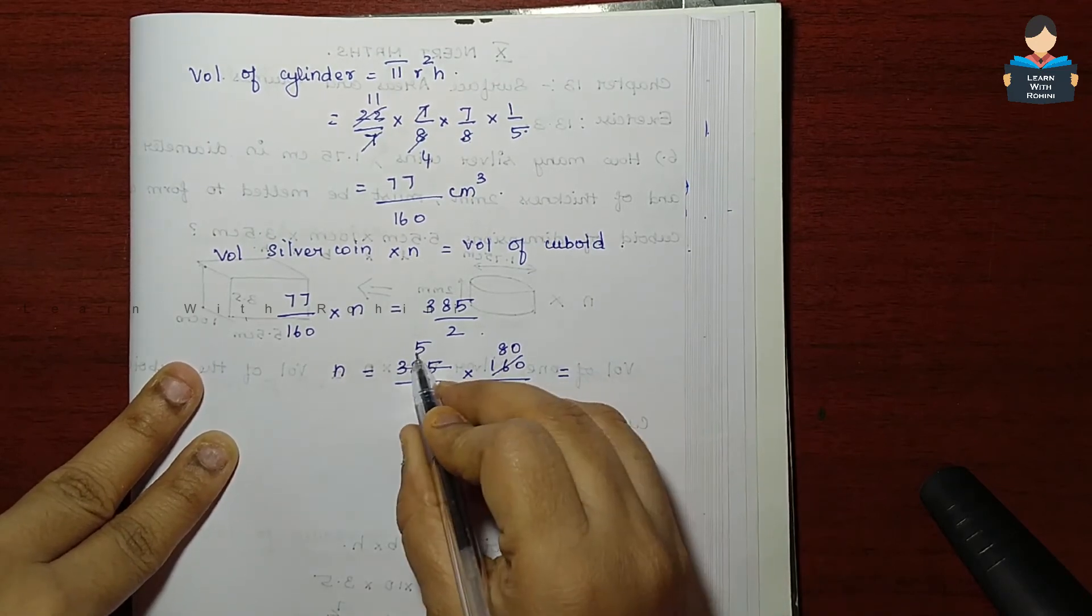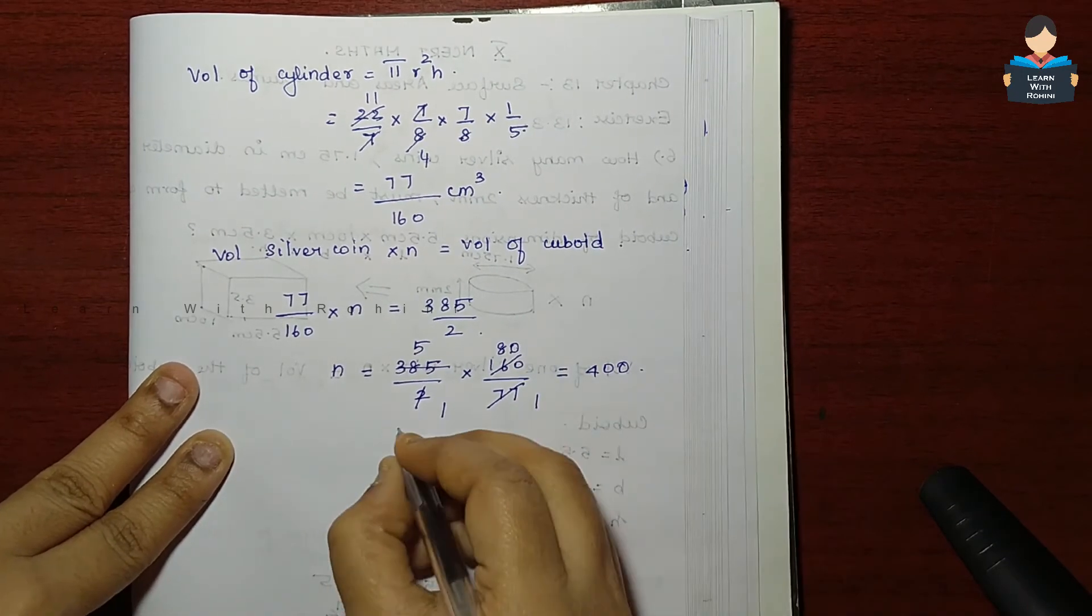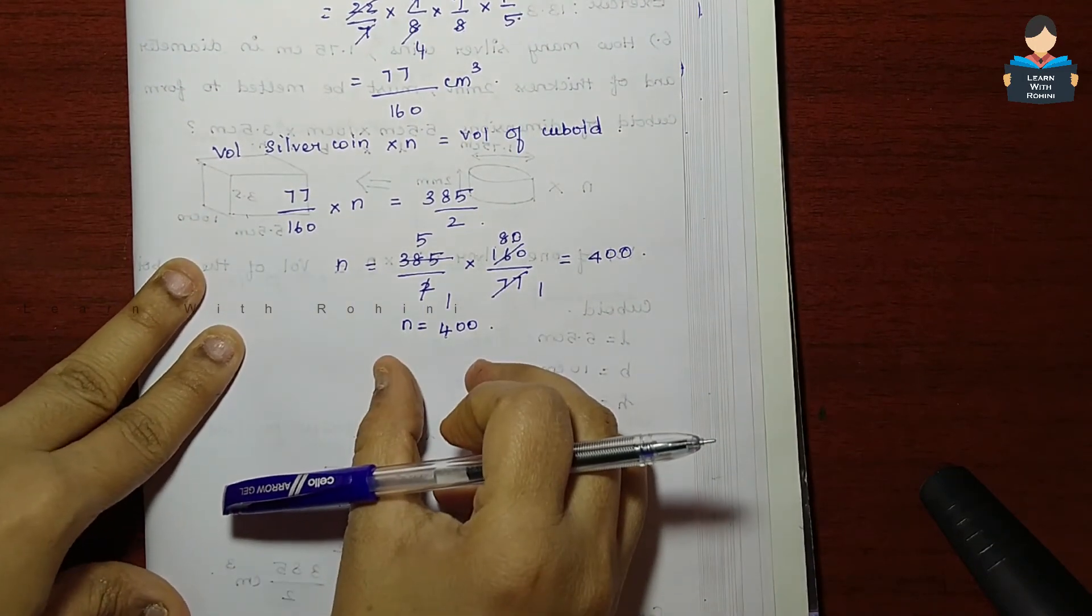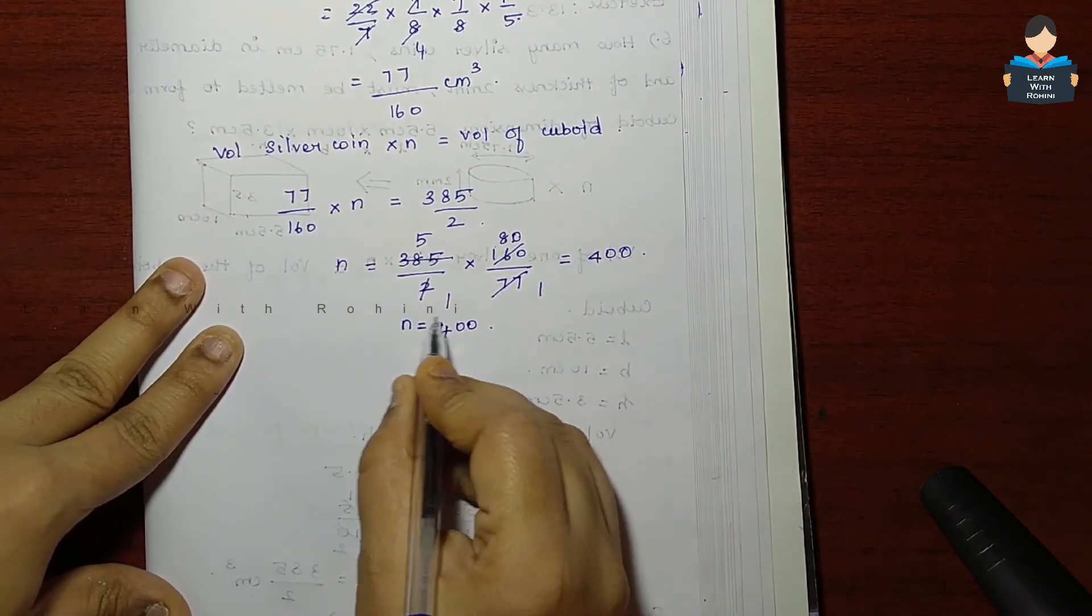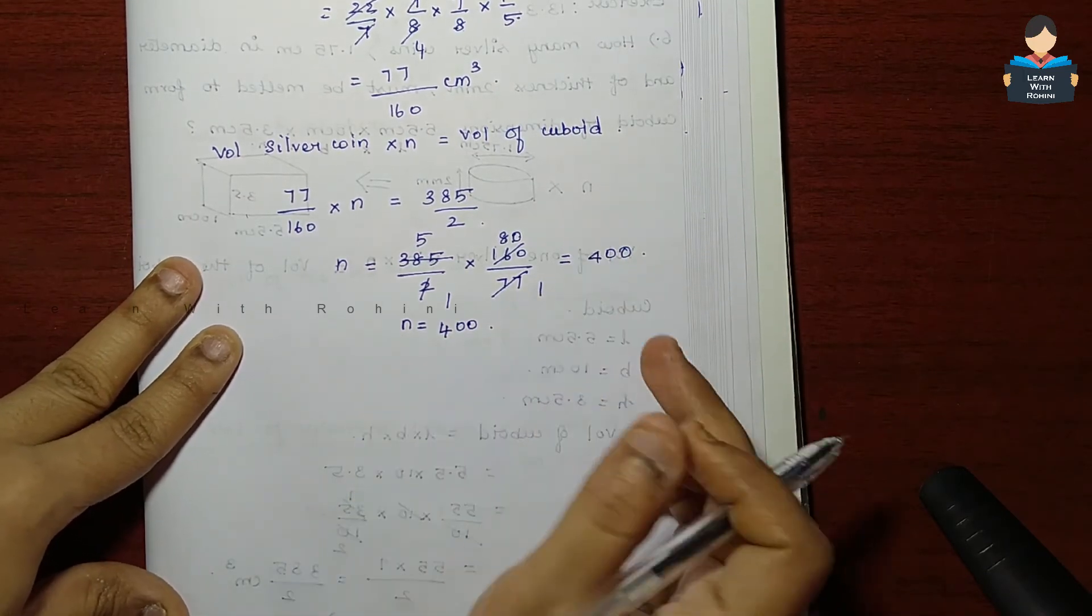So 5 eights are 40, gives 0, so 400. So n equal to 400. How many silver coins are there? 400 silver coins must be melted to form that cuboid.